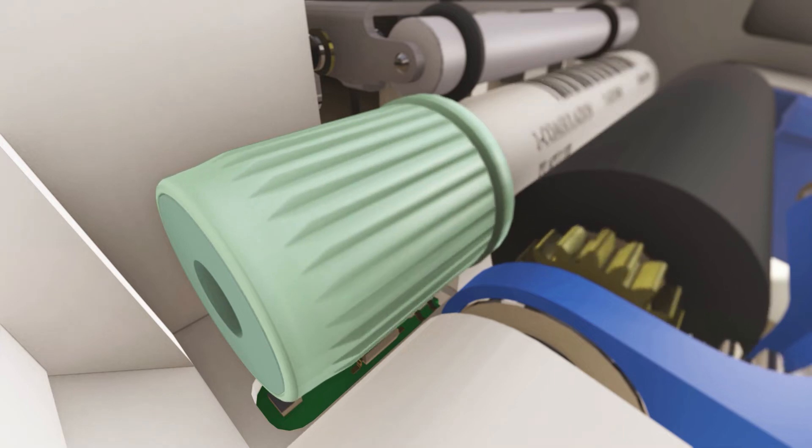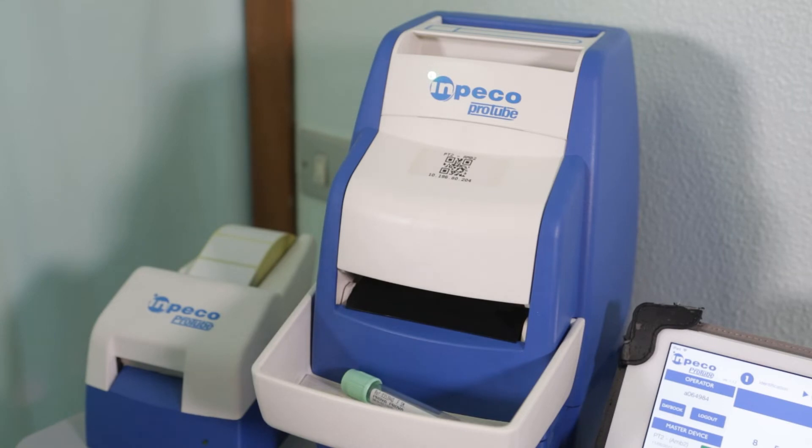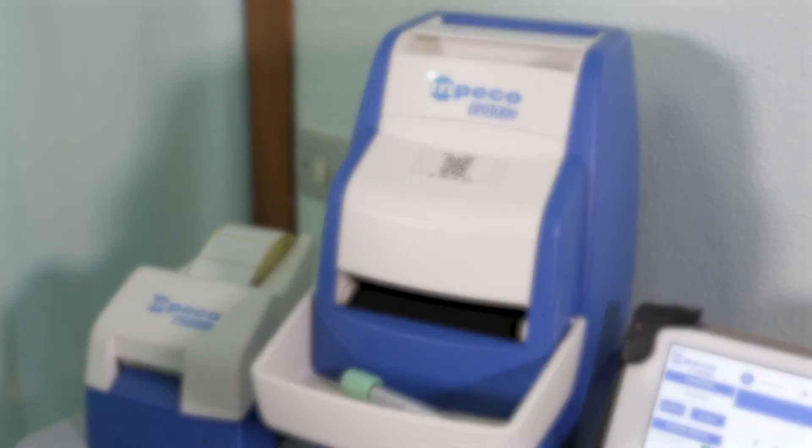The tubes are automatically labeled in front of the patient to avoid the wrong blood in tube errors that may lead to catastrophic outcomes.